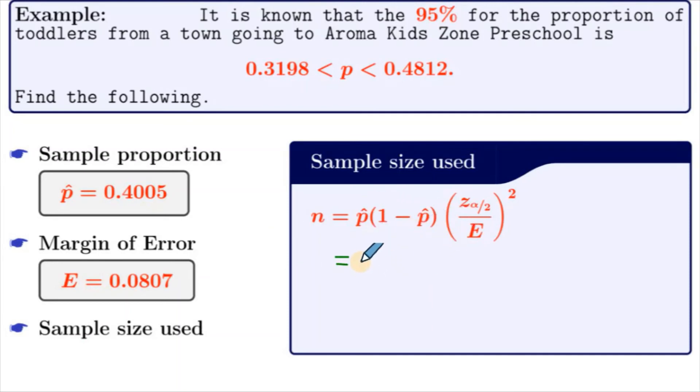So we get our p-hat is 0.4005, 1 minus 0.4005, Z alpha by 2 is 1.96, and our E is 0.0807 squared. This whole thing comes out to be 141.627.